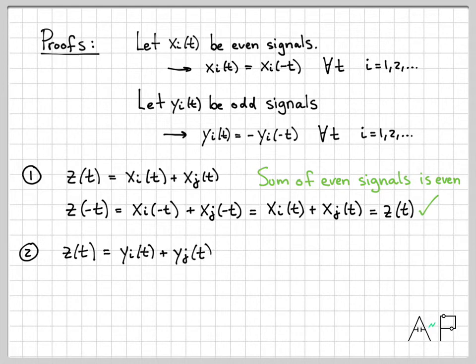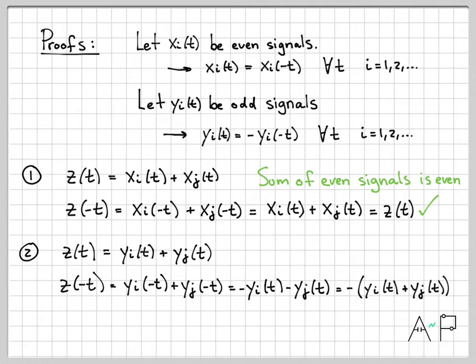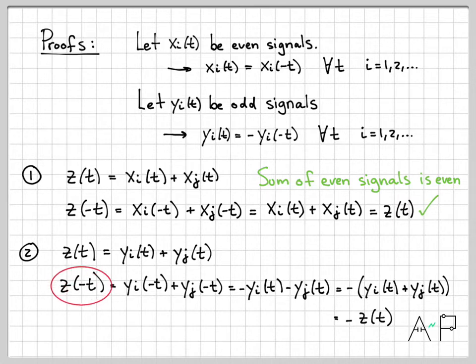Next: z(t) = yi(t) + yj(t) — adding two odd signals. Does z(t) have any nice properties? Let's compute z(-t): that's yi(-t) + yj(-t). Since yi and yj are both odd, that becomes -yi(t) - yj(t). Factoring out the negative gives -(yi(t) + yj(t)), which is -z(t). So z(-t) = -z(t), meaning this is an odd signal — a sum of odd signals is itself an odd signal.